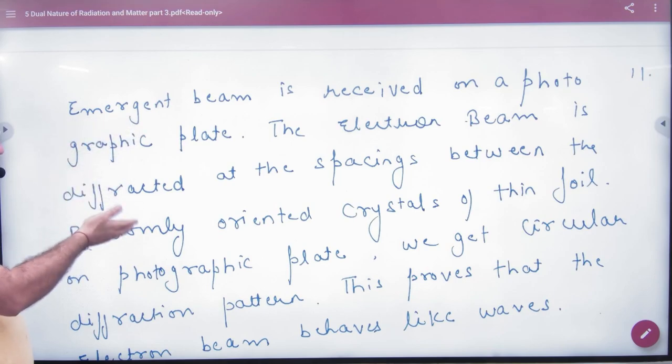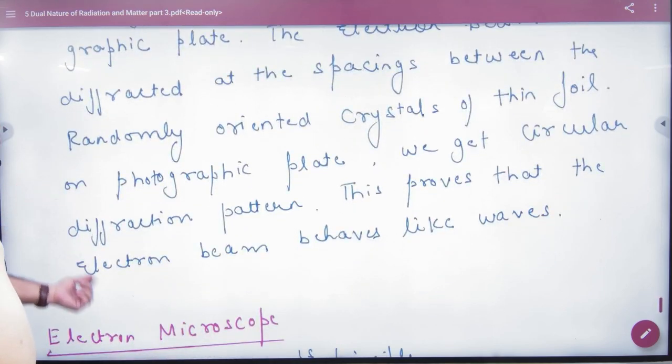The electron beam is diffracted at the spacing between randomly oriented crystals of thin foil on a photographic plate and made a circular pattern.